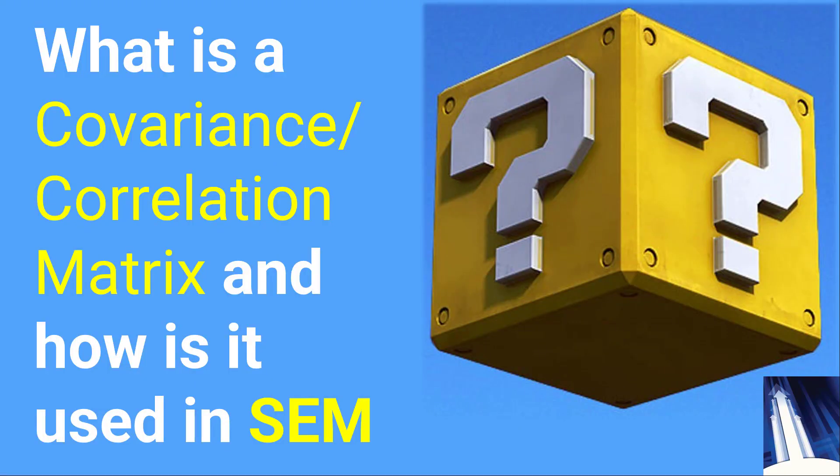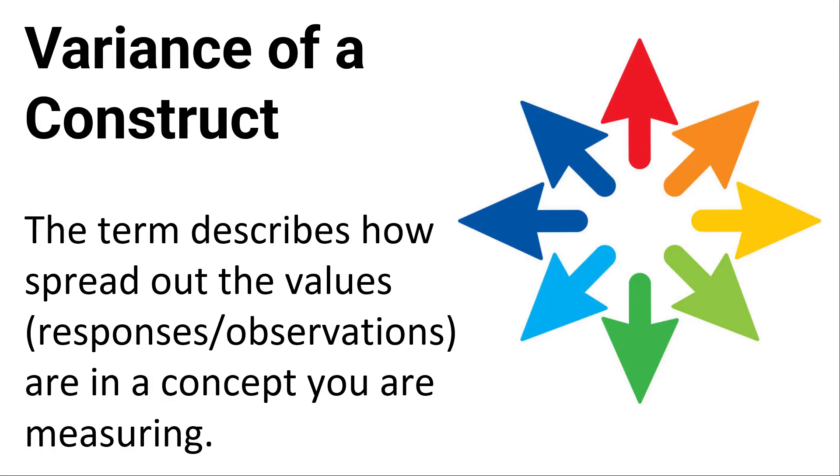Welcome, good people. My name is Joel Collier and today we're going to talk about what is a covariance or correlation matrix and how it's used in SEM. So before we go into specifically what is a covariance matrix, we need to talk about what is variance because that kind of sets everything up.